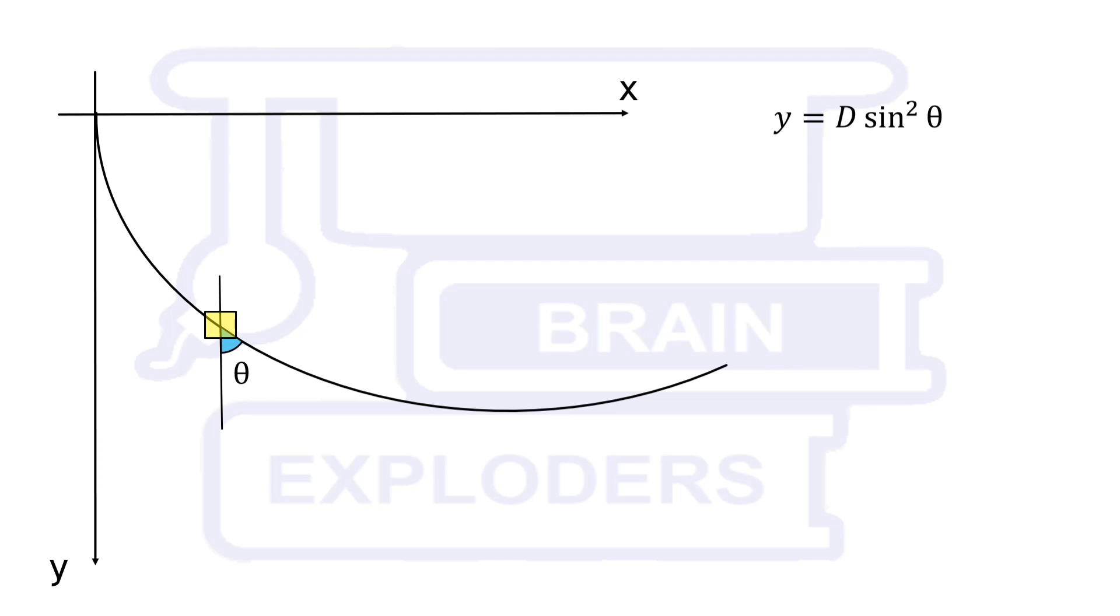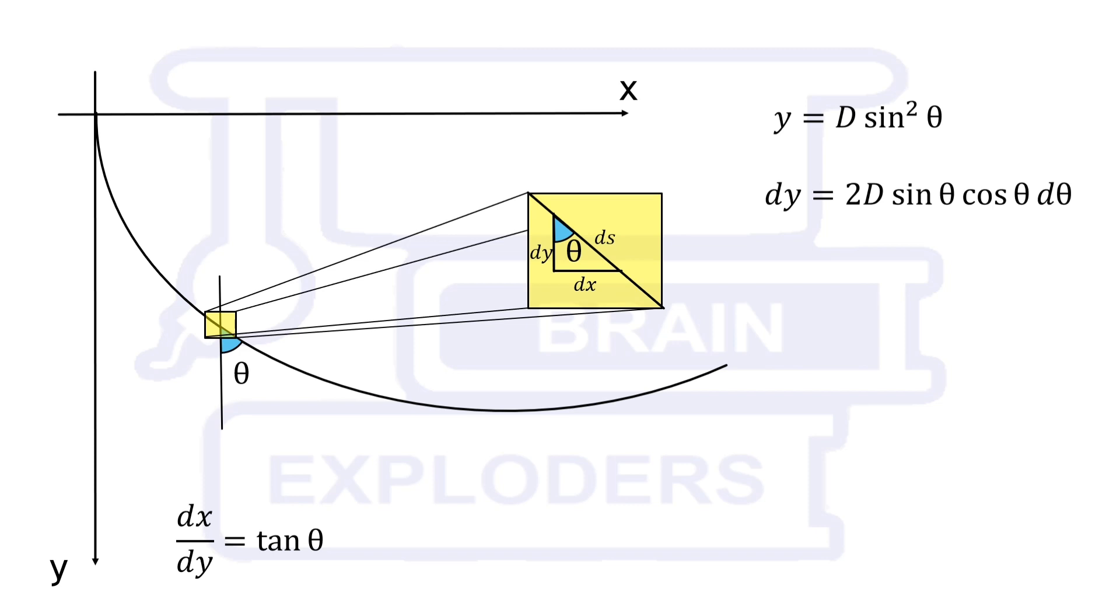Look at the infinitesimal small part of this curve. If change in y direction is dy and change in x direction is dx then dx by dy is equal to tan theta. Differentiating y with respect to theta we find dy equals to 2d sin theta cos theta d theta. On substituting this value cos theta is cancelled out and on integrating we get x equals to d times theta minus sin 2 theta over 2.